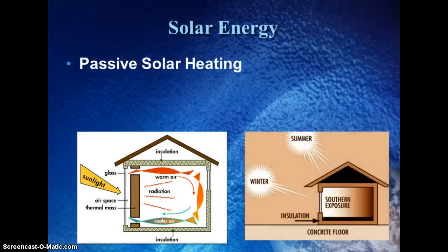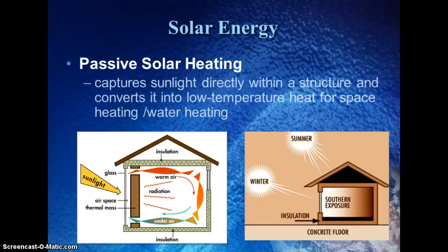The first renewable source is solar. There are two types of solar energy you need to be able to distinguish between. The first one is passive solar heating, and the second is active. Passive solar heating is using the sunlight directly for heat — for space heating, so heating the air, or heating a hot water heater.